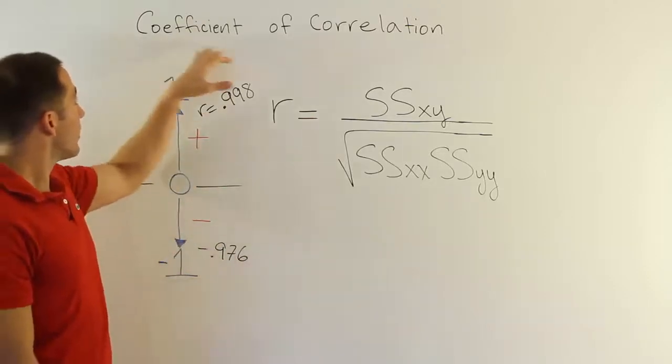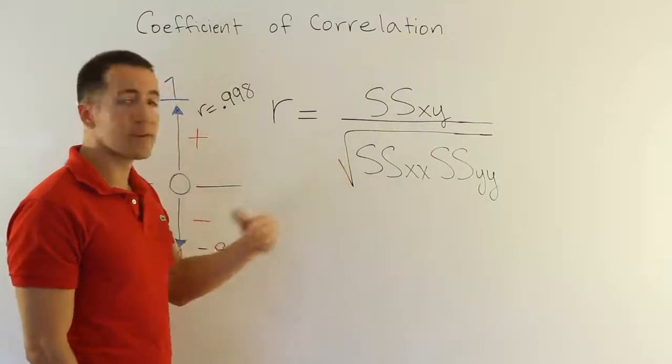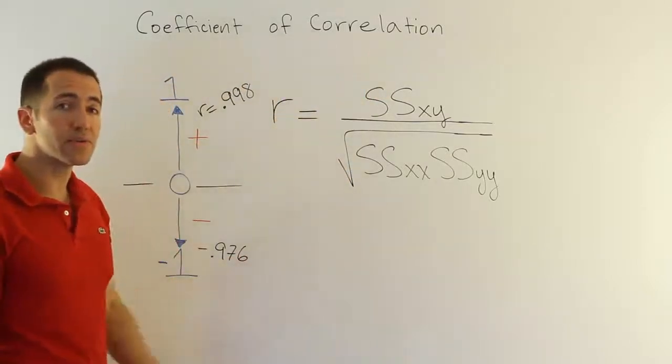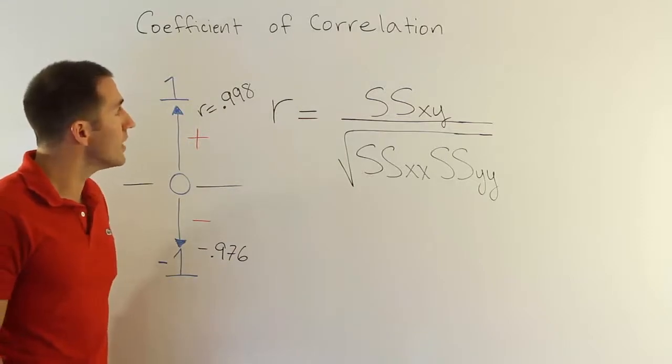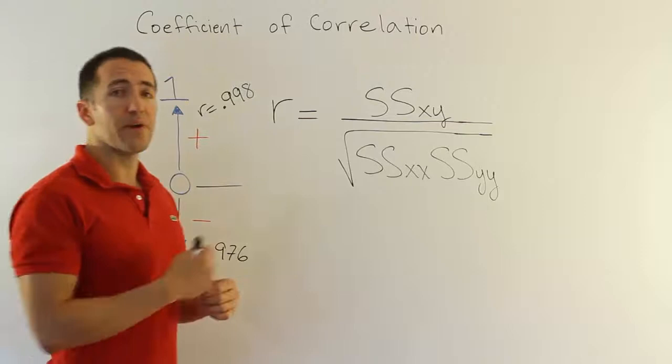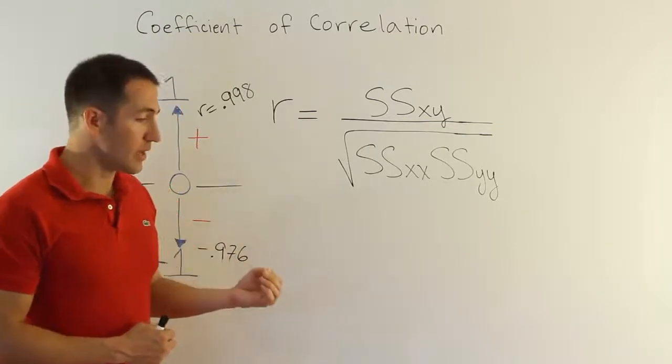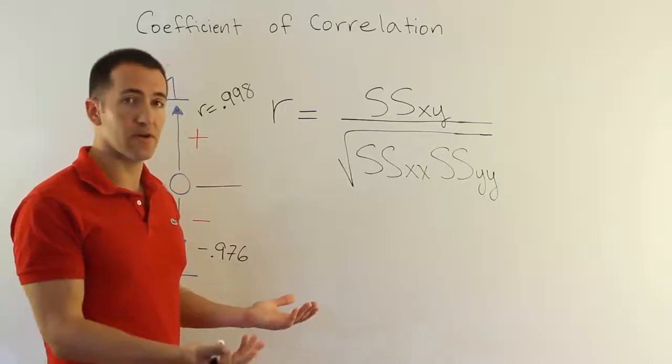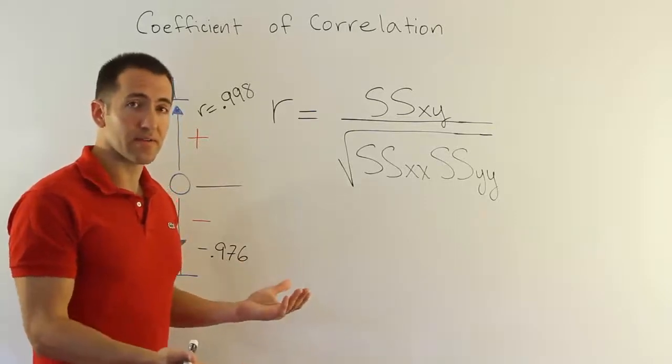All right, so that's it. The terminology coefficient of correlation, remember the strength of the linear relationship here, you can also refer to that as the correlation between the two variables. Try to think of correlation as essentially the variables sort of appear together. So you might say smoking and lung cancer are correlated. That means that people who smoke tend to also end up with lung cancer.